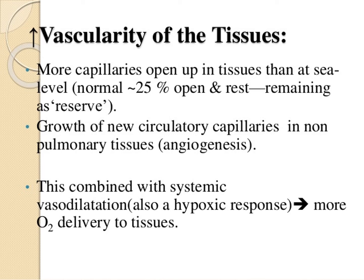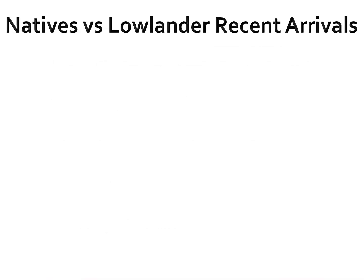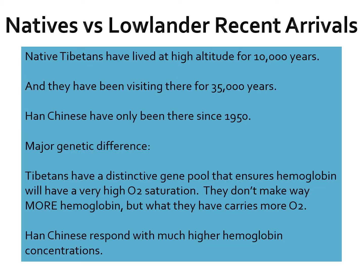An interesting case study involves two groups in the Tibetan/Nepalese highlands. Native Tibetans have lived there for at least 10,000 years and visited archaeologically for about 35,000 years. The Han Chinese have only been at these high altitudes since about 1950. The major genetic difference is that Tibetans have a distinctive gene pool ensuring hemoglobin will have very high O2 saturation — they don't make more hemoglobin or more blood cells, but what they have carries more oxygen. The Han Chinese respond to high altitude by producing much higher hemoglobin or red blood cell concentration.